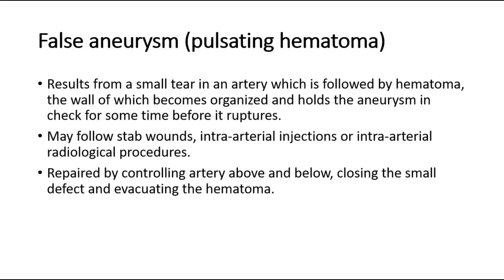False aneurysm, also called pulsating hematoma, results from a small tear in an artery which is followed by a hematoma, the wall of which becomes organized and holds the aneurysm in check for some time before it ruptures. It may follow stab wounds, intra-arterial injections, or intra-arterial radiological procedures. It is repaired by controlling the artery above and below, closing the small defect, and evacuating the hematoma.